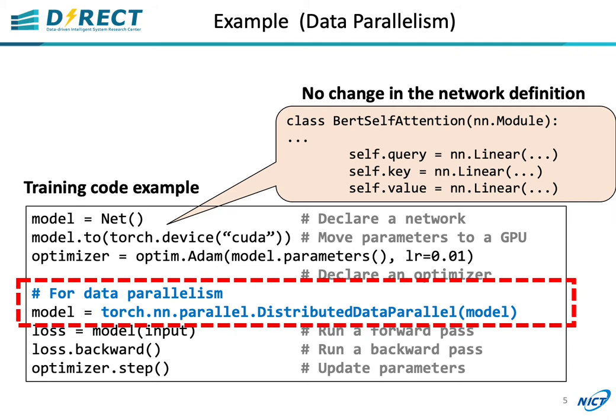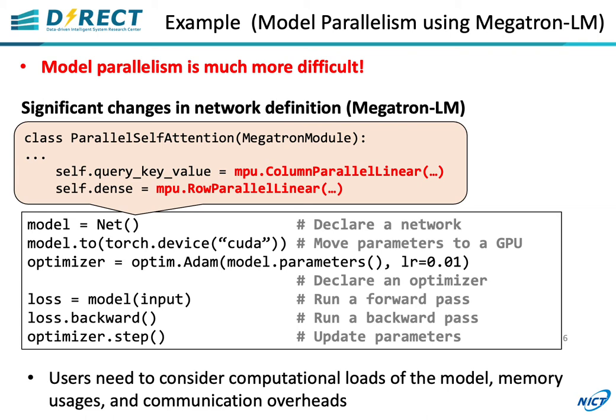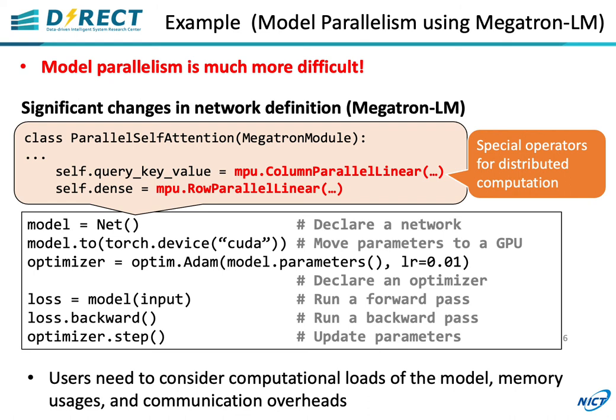Model parallelism, however, is much more difficult. When using Megatron LM, for example, you need to significantly change the model's definitions using special operators for distributed computation. This is very tough even for experts. Users need to consider computation laws of the model, memory usages, and communication overheads.